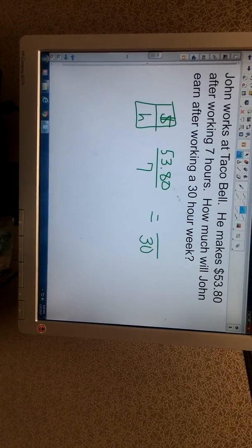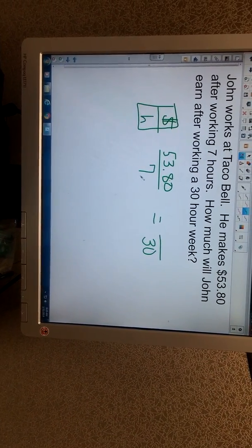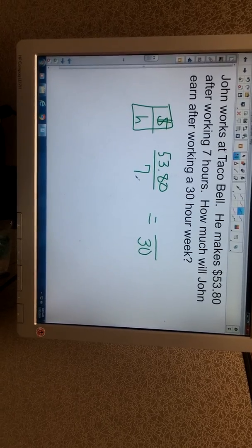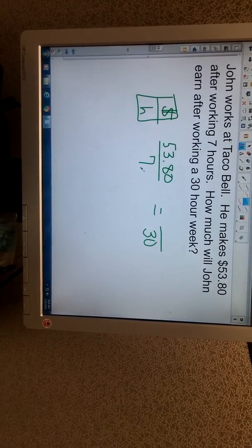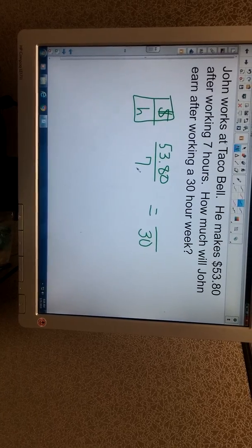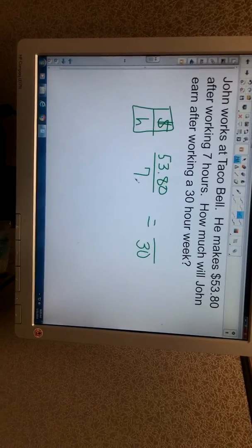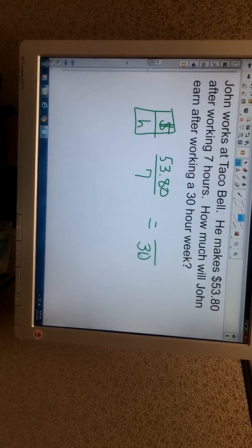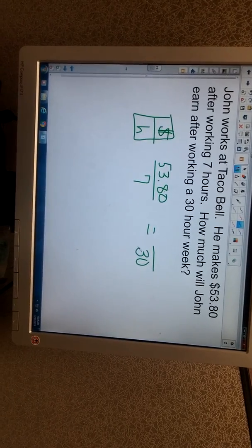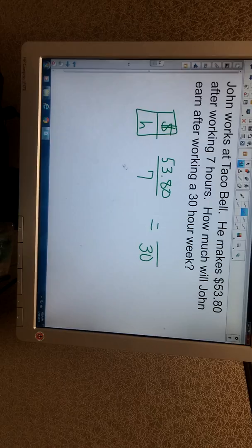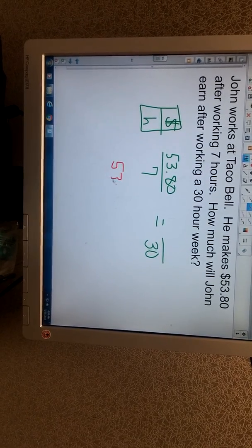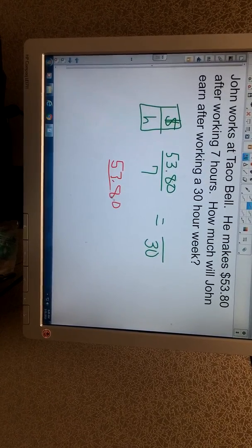Here's the next hint for you. Here's $53.80 after working for 7 hours. And it wants to know how much he will earn after working for 30 hours. The thing is, he's not going to be able to go from 7 to 30. 7 times 4 is 28, 7 times 5 is 35. It won't work. So, what we have to do is figure out about how much John is going to make in one hour.